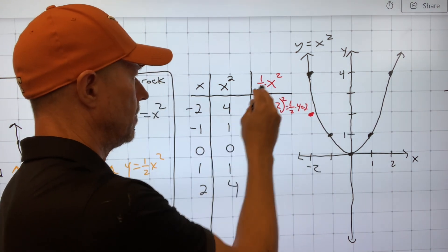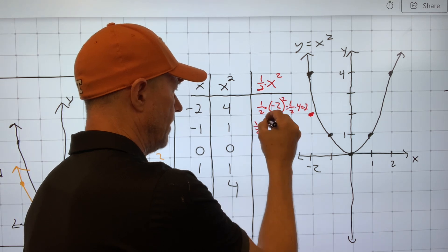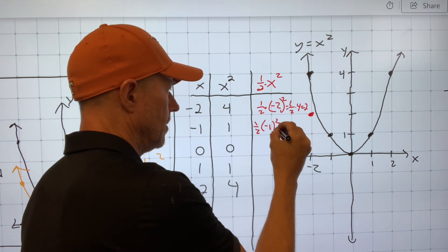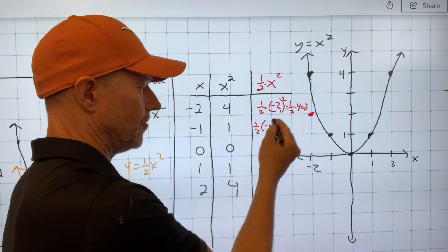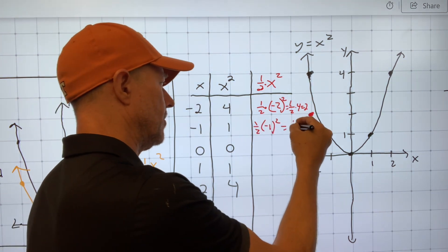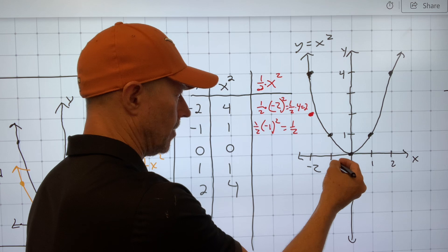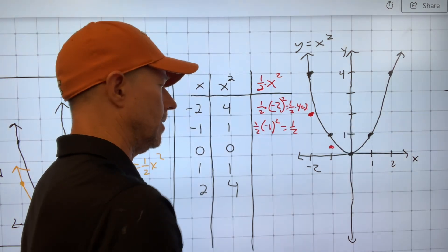What about if I put in 1? Well, I get 1 half times the negative 1 squared. Well, that's a positive 1, right after you square it, and then you multiply by half, you get a half.